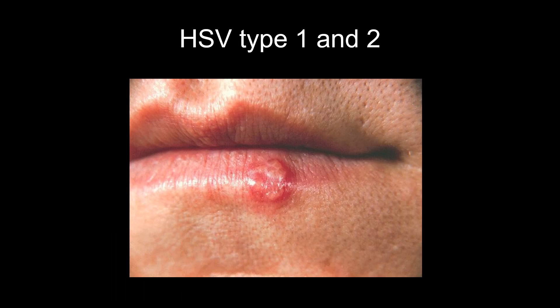Herpes simplex types 1 and 2 are both latent infections — a type of persistent infection. Both types infect neurons of sensory ganglia. Typically, type 1 causes cold sores around the oral region and type 2 causes genital ulcers, but because of oral sex, you can get type 2 around the mouth and type 1 around the genitals, so they're not neatly compartmentalized.